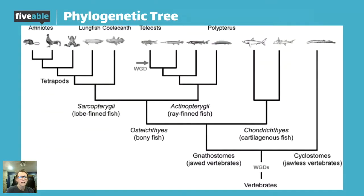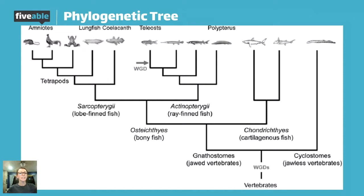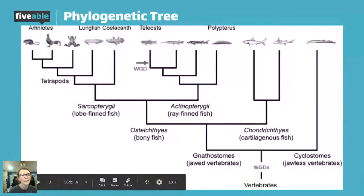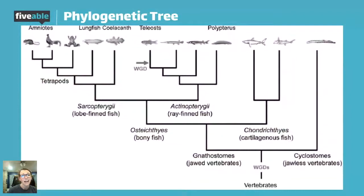Another big topic is phylogenetic trees. We've talked about different ways to get new species, how we prevent separate species from mating, and adaptive radiation where we get lots of different species from one common ancestor. The way we can visualize this is really important and it shows up on the AP exam all the time. What a phylogenetic tree shows is how recently two species came from a common ancestor.